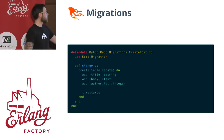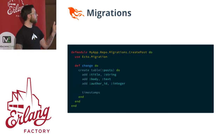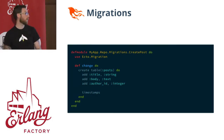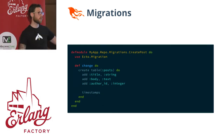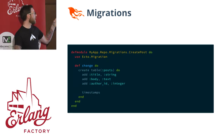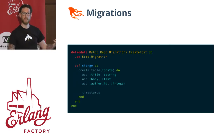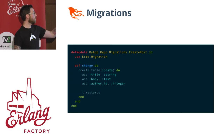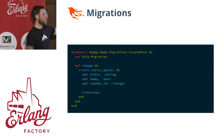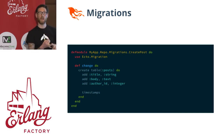Migrations — this is what that looks like for Ecto. This change function, when you run mix ecto.migrate, it runs the change function. We have a nice DSL that allows you to create a table — we create table posts, add these columns, and timestamps will automatically generate inserted_at and updated_at fields in your database.